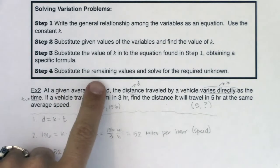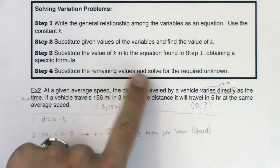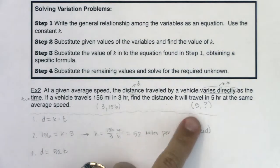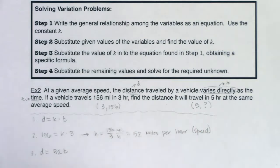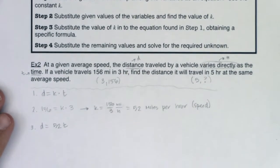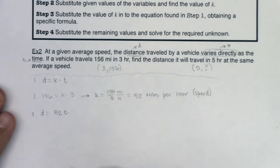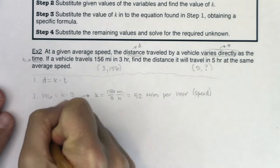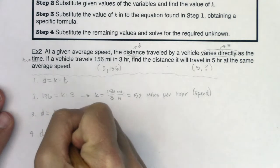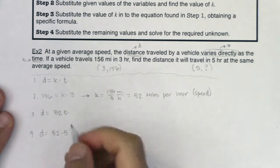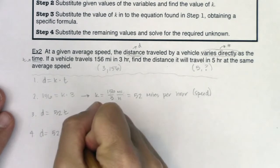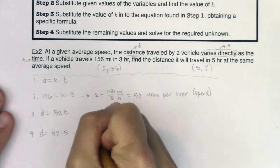Great, and then it says substitute the remaining values and solve for the required unknown. Well, the remaining value here is five. I don't know how far I've traveled in five minutes, so now let me scooch this up just so we have some room to see all of this. So then for step four, I'm going to say D is equal to 52 times five. I can actually crunch that one in my head too. So that's going to be 260.